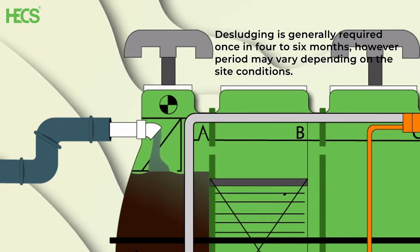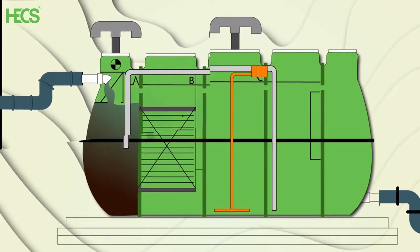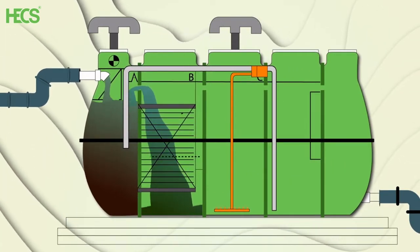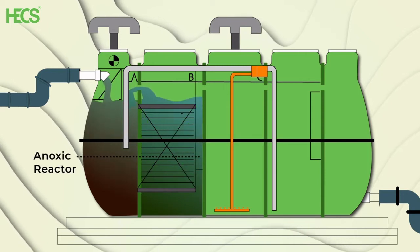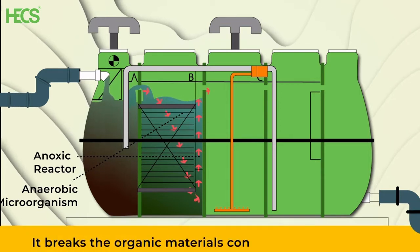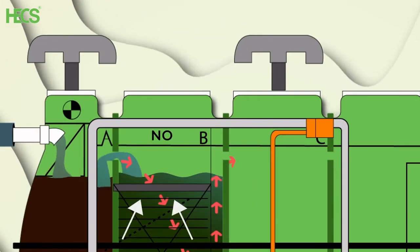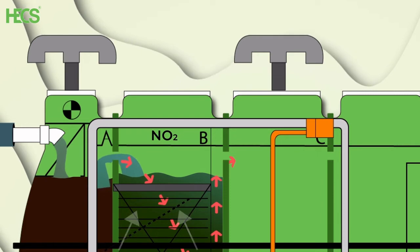However, the period may vary depending on the site conditions. The sewage then overflows from the sedimentation and equalization chamber into the anoxic reactor. This chamber consists of anaerobic microorganisms, which break the organic material contained in the sewage. Denitrification process also takes place in this chamber.